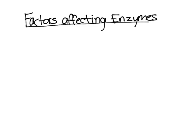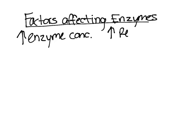If you want a reaction to occur and enzymes help it occur, so if you increase enzyme concentration, you will increase the reaction rate and make the reactions occur faster, because more enzymes means they are more likely to lower the activation energy and the more likely the reaction will occur.